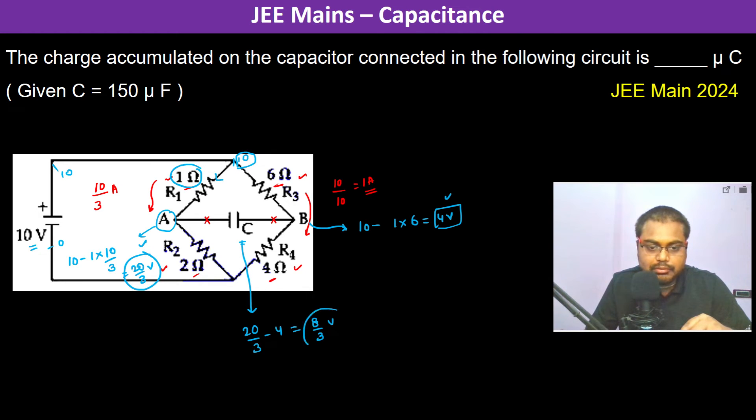The charge accumulated is calculated using Q equals CV. With voltage at 8/3 volts and C equals 150 microfarads, we get 150 times 8/3. Simplifying: 150 divided by 3 is 50, so 50 times 8 equals 400 microcoulombs, which is the answer.